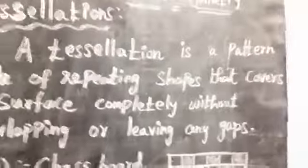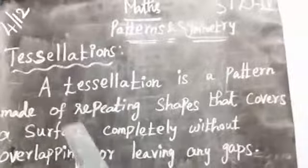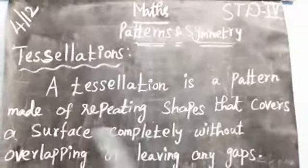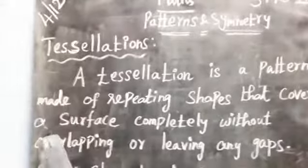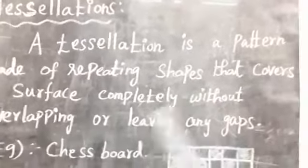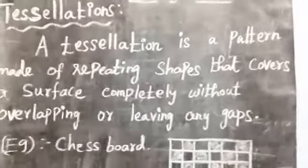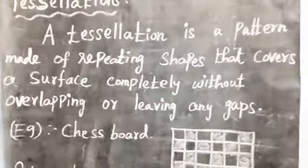Tessellation means our patterns are made of repeating shapes that cover the surface completely without leaving any gaps. A tessellation is a pattern made of repeating shapes that covers a surface completely without overlapping or leaving any gaps.